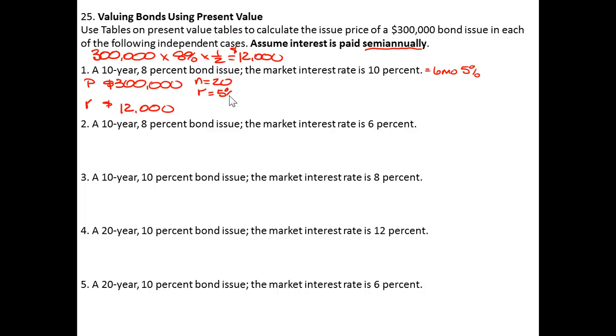The interest rate will be 5%. So going to Table 4 for the single sum, I find 0.37689, and going to Table 5 where N is 20 and the interest rate is 5%, I find a value of 12.46221.